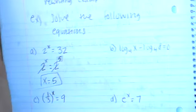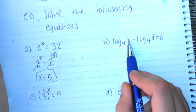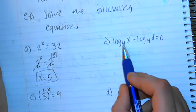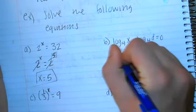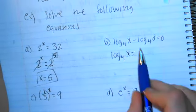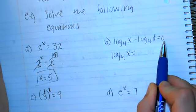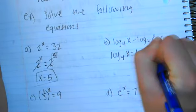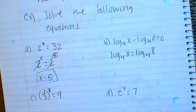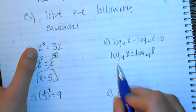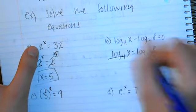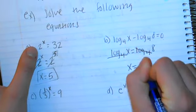Next: log base 4 of x minus log base 4 of 8 equals 0. These are logs with two same bases. I'll add log base 4 of 8 to both sides, giving me log base 4 of x equals log base 4 of 8. Since we have logs on opposite sides with the same base 4, the logs cancel and we set x equal to 8.